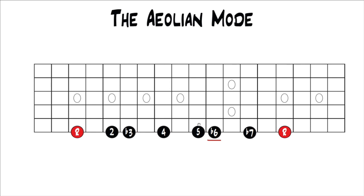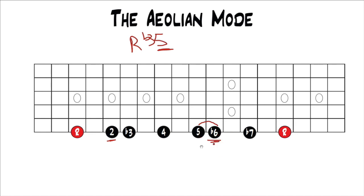The flat 6th is dissonant because of the distance between the 5th and the 6th. A minor triad, if you're playing this over a minor chord, is root, flat 3, 5. When you play that flat 6th with that perfect 5th, it's a minor 2nd interval — pretty dissonant — and that's why it's an avoid note. But avoid doesn't mean don't play it; it just means don't rest on it usually. That flat 6th along with the major 2nd or major 9th is the sound of the Aeolian mode, so don't be afraid to really emphasize that flat 6th — just don't stay on it too long.